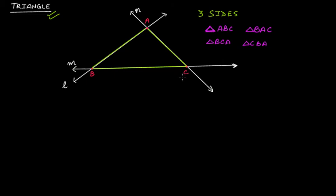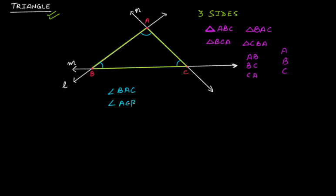What are the three sides of this triangle? Side one is AB, then you have BC, and then you have CA. It has three vertices: A, B, and C. It also has three angles — this angle, this angle, and this angle. The first angle is angle BAC, the second is angle ACB, and the third is angle CBA. These are the three angles of this triangle.